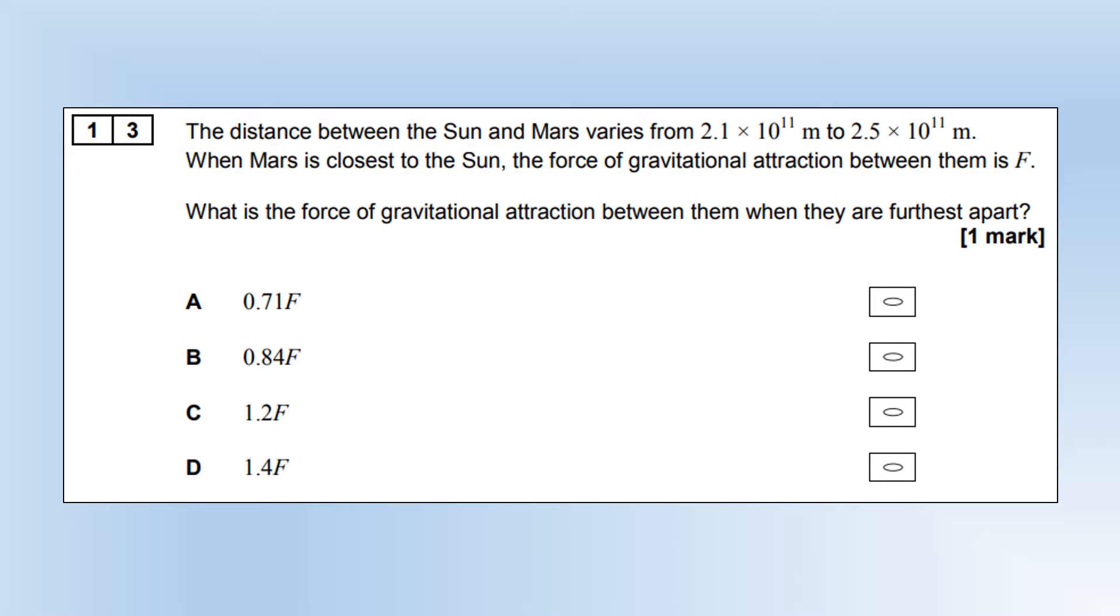The distance between the Sun and Mars varies from 2.1 times 10 to the 11 to 2.5 times 10 to the 11 meters. When Mars is close to the Sun, the force of gravitational attraction is F. What is the force when they are furthest apart? I've made expressions for the force at the minimum distance and the maximum distance. Because the distance is bigger, we'd expect the force to be slightly smaller. I've taken expression 2 and divided it by expression 1. The Gs, Ms, and Ms will cancel out. We can plug our numbers in and we end up with option A.